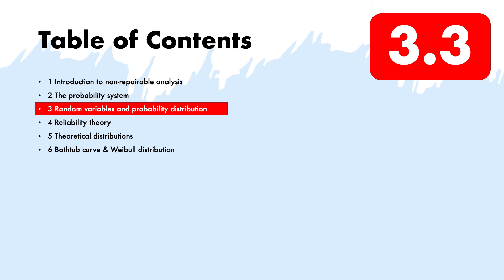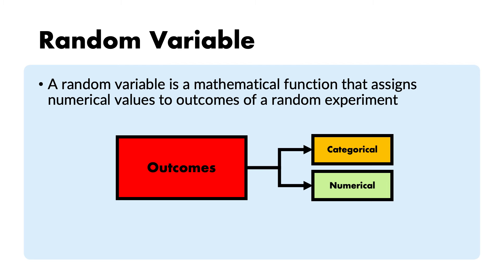Let us go to the section on random variables and distributions. The random variable is sometimes a concept that is not straightforward. One misconception is that it is a variable because of the name, but it is not a variable — it is in fact a mathematical function. This function makes a mapping from the outcomes of the random experiment to numerical values. We need to give numbers to outcomes because sometimes outcomes do not come as numbers, such as when dealing with categorical data like types of fruit.